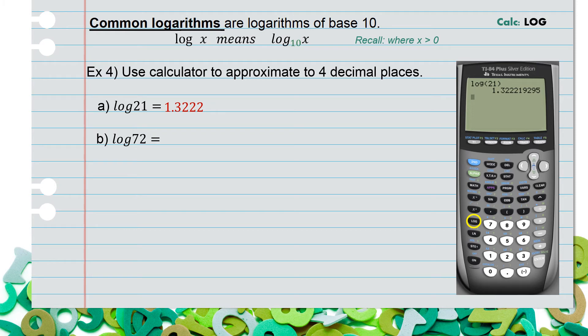For part b, we're being asked to find log of 72. Click the log button, type in 72, click enter. You must round to 4 decimal places, and you should find 1.8573.